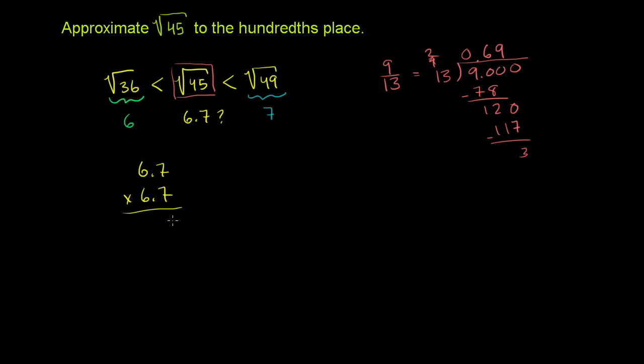So we have 7 times 7 is 49. 7 times 6 is 42, plus 4 is 46. Put a 0 now, because we've moved a space to the left. So now we have 6 times 7 is 42. Carry the 4. 6 times 6 is 36, plus 4 is 40. And so 9 plus 0 is 9. 6 plus 2 is 8. 4 plus 0 is 4. And then we have a 4 right over here. And we have two total numbers behind the decimal point. 1, 2. So this gives us 44.89. So 6.7 gets us pretty close,